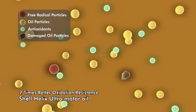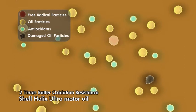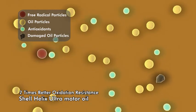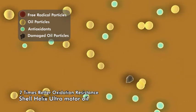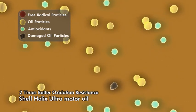The additional antioxidants in Shell Helix Ultra's formulation neutralize more of the free radicals, slowing down the oxidation process. This means the engine oil can protect the engine parts and ensure it operates at its best.